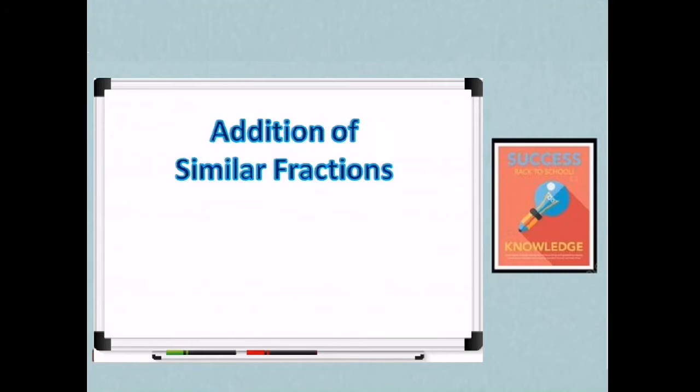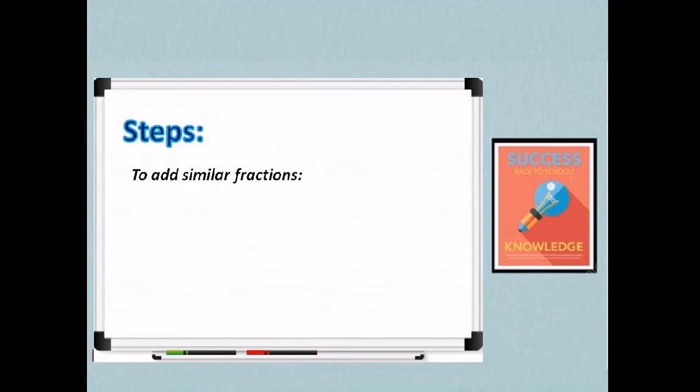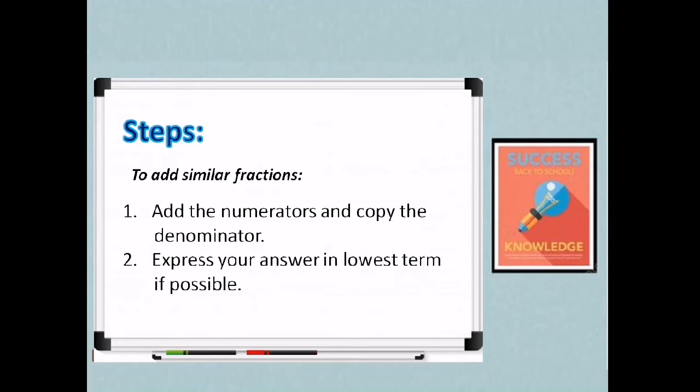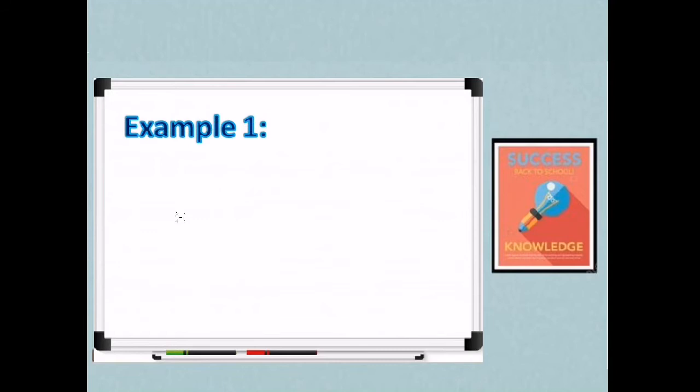So let's start with addition of similar fractions. Similar fractions are fractions with the same denominators. So yung denominators ay makikita natin sa ibaba ng fraction sign, wherein yung dalawang fractions na i-add natin ay magkatulad ng denominators. So what are the steps to add similar fractions? 1. Add the numerators and copy the denominator. Kapag pares ng denominator, just copy the denominator and add the numerators. 2. Express your answer in lowest term if possible. So if there are common factors, we can cancel it out para makuha yung lowest term or reduced form ng fraction.